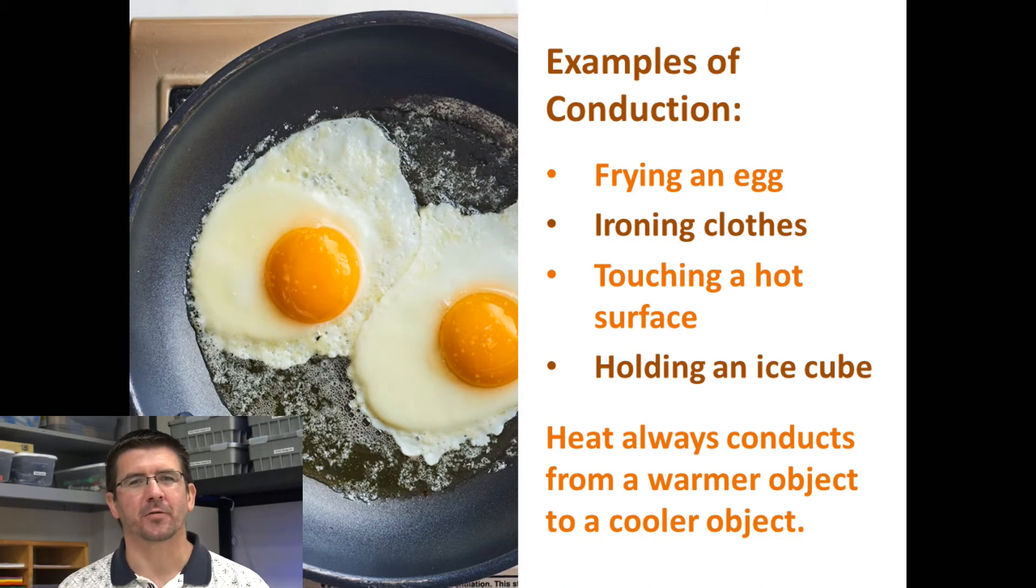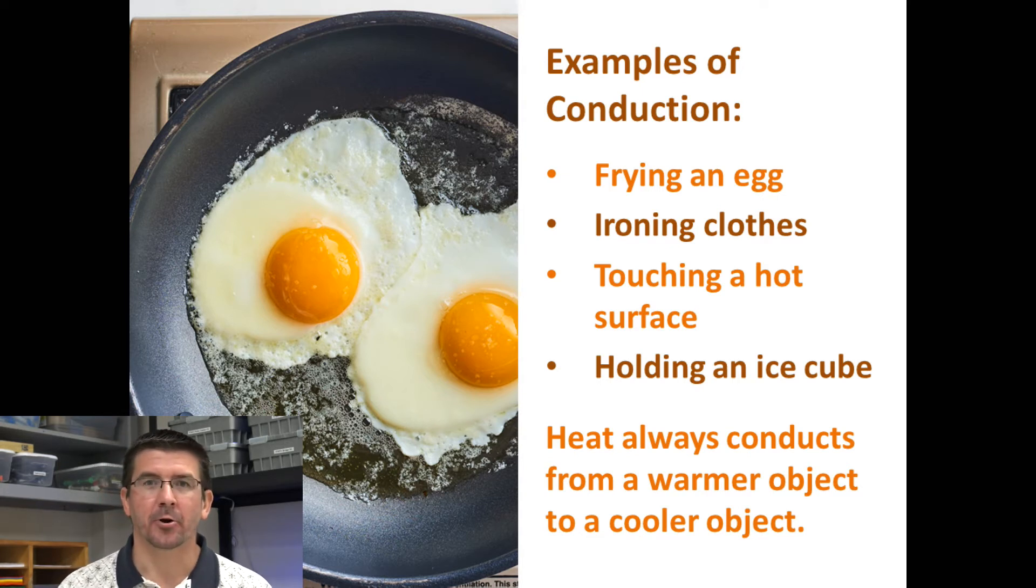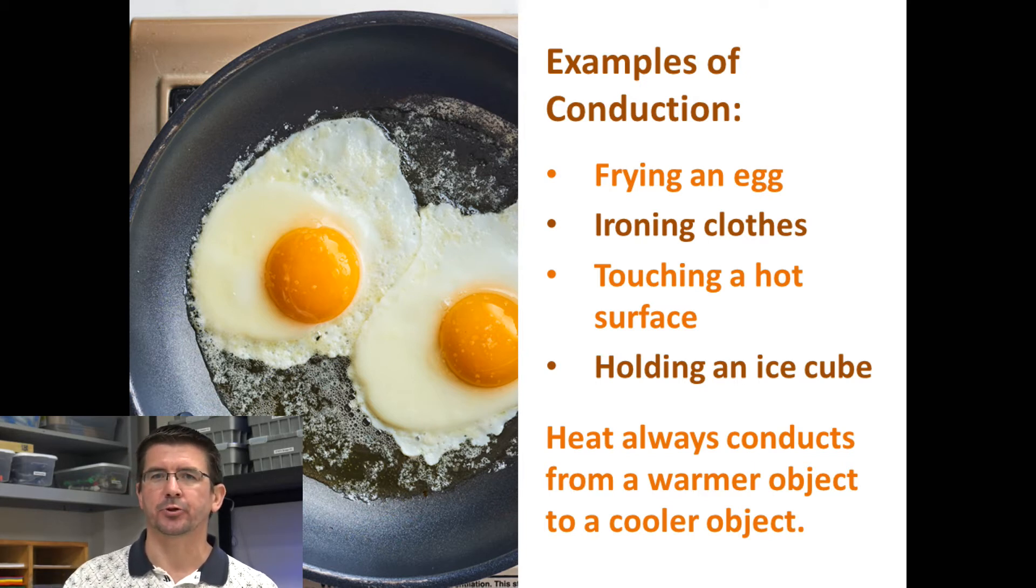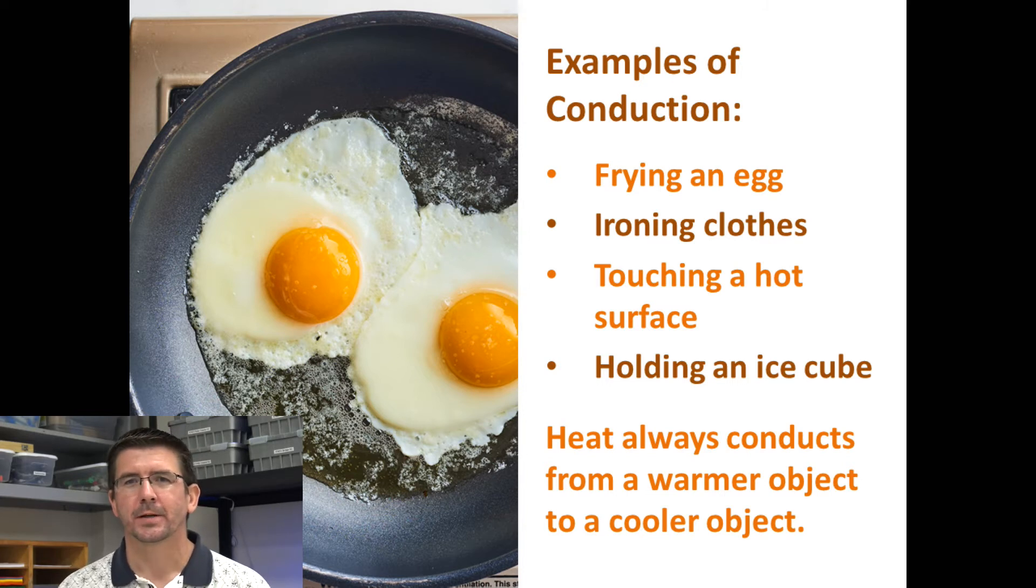Now some other examples of heat transfer by conduction include things like cooking an egg or anything that we cook in a pan like that. Ironing clothes, we take the hot iron, we put it on the clothes, that energy, that heat transfers from the iron to the clothes to get our wrinkles out. Touching a hot surface, when we touch something and we say oh that's hot, that heat is transferring into our hand. And that's why if we leave our hand on something hot too long, that heat will actually burn it because it's transferring that energy, burning our skin.